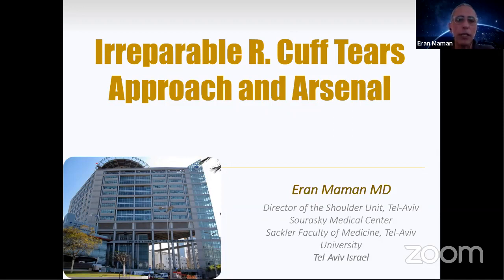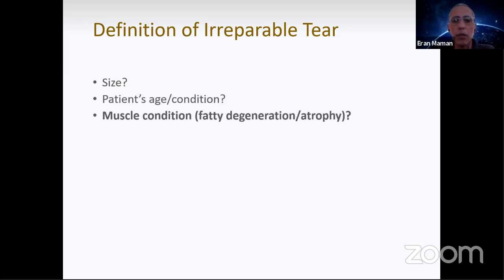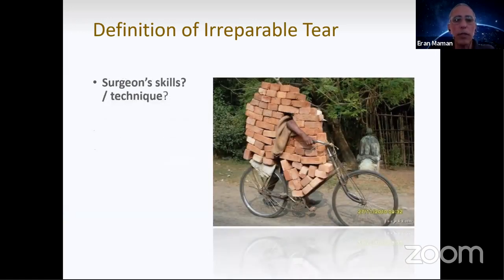We're going to discuss the irreparable rotator cuff tear solutions and approach. We start with what is the definition of irreparable tear? Is it the size that makes it irreparable, the patient age or condition, muscle condition with fatty degeneration or atrophy, bone condition whether osteoporotic, the duration of tear, or the surgeon's skills or technique?